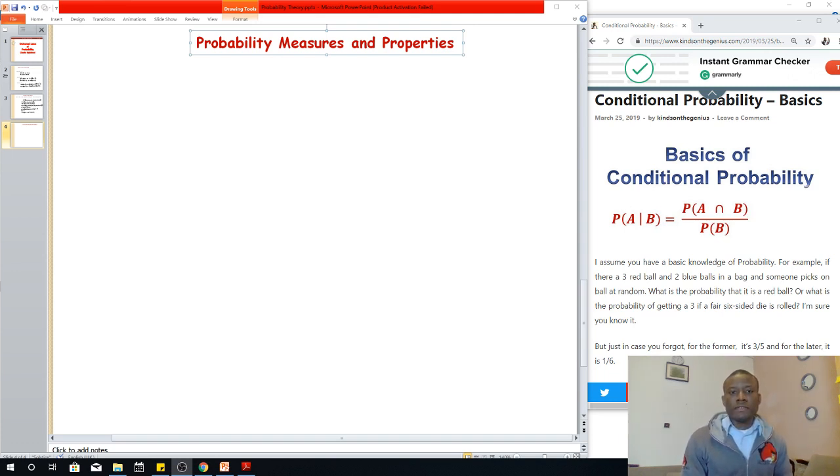We are going to be talking about probability measures and properties. This is a relationship between set theory and probability theory, so it will be very easy. It's just a few notations that you need to know before we actually go into probability proper.